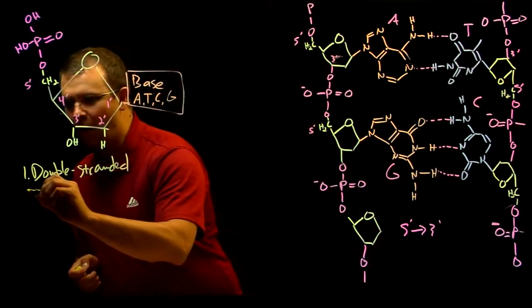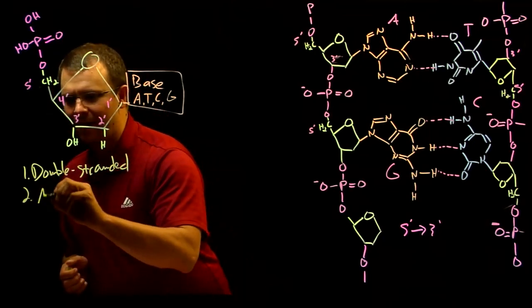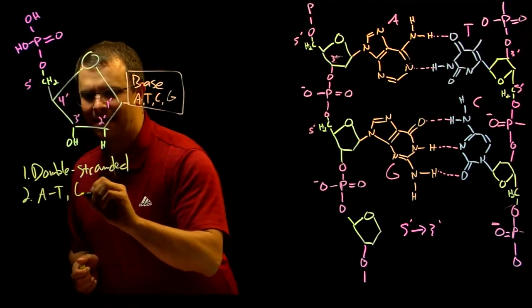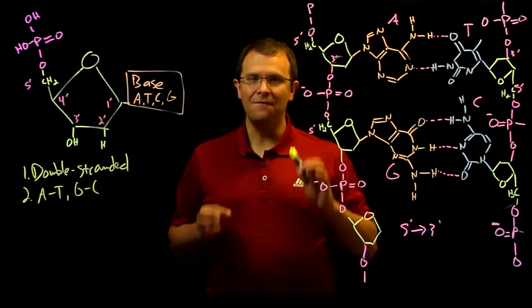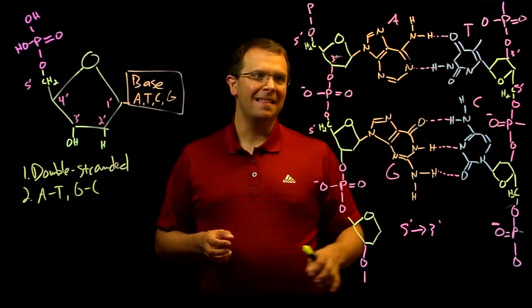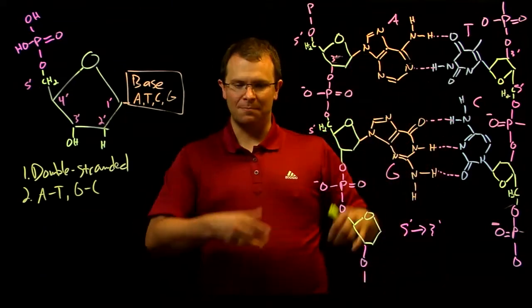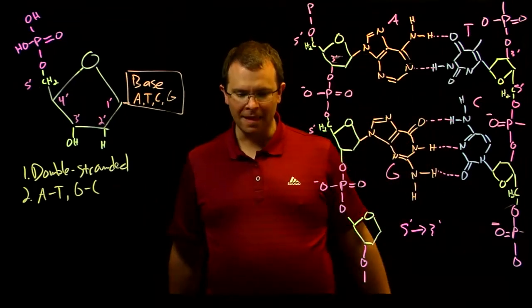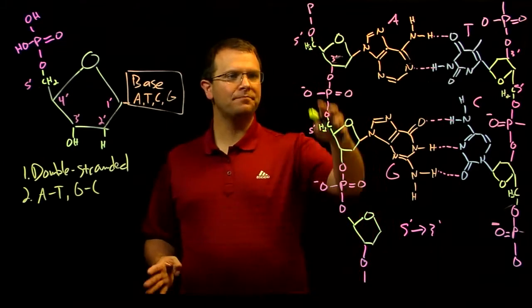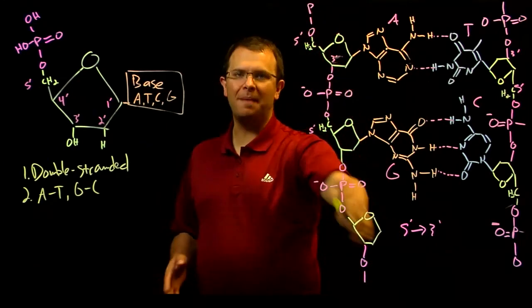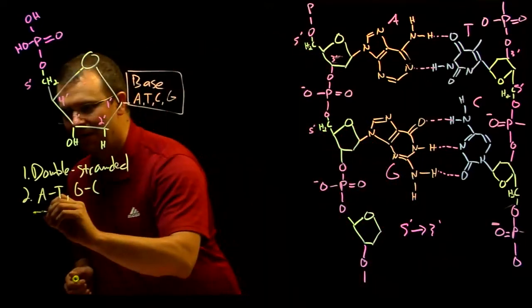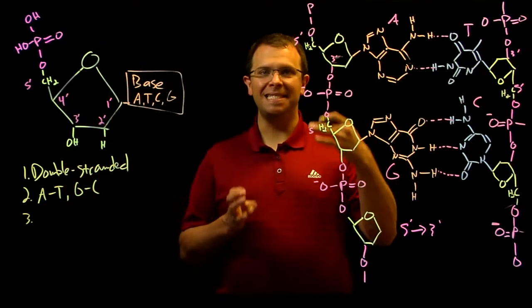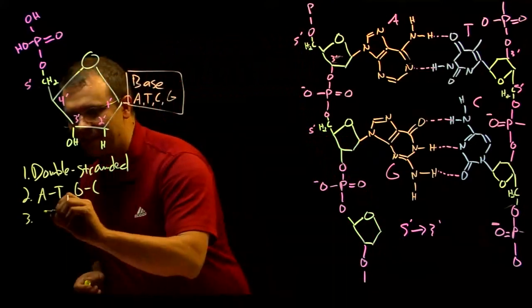That Watson-Crick base pairing, adenine to thymine, guanine to cytosine, that is invariant. That is always the way that these base pairs line up. The phosphate sugar backbone stays the same while the bases differ. It's that sequence of bases that encodes the information.